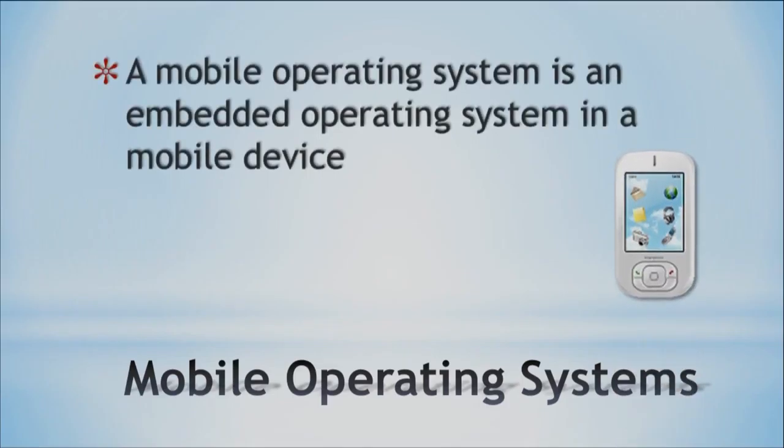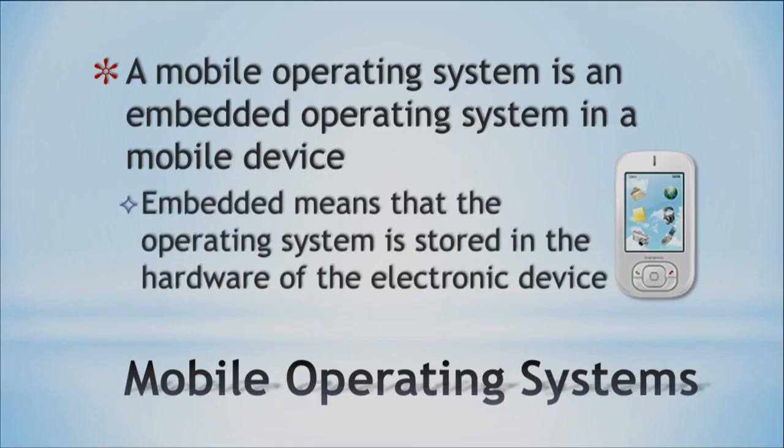A mobile operating system is an embedded operating system in a mobile device. Embedded means that the operating system is stored in the hardware of the electronic device. For larger computers like desktops or laptops, the operating system is part of the software and takes a little while to load. But for tablets or cell phones, you want it to be quick — you don't want the worldwide wait going on. So the operating system is embedded, part of the hardware, and anything that's part of the hardware just runs a lot faster.